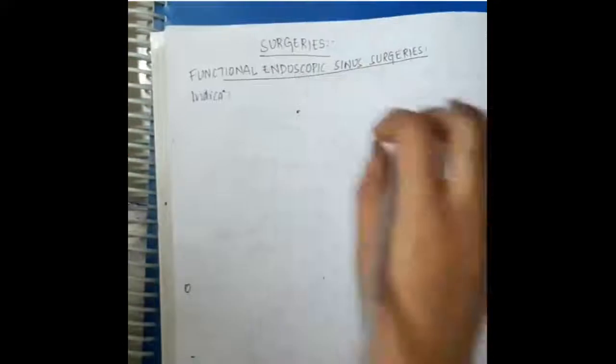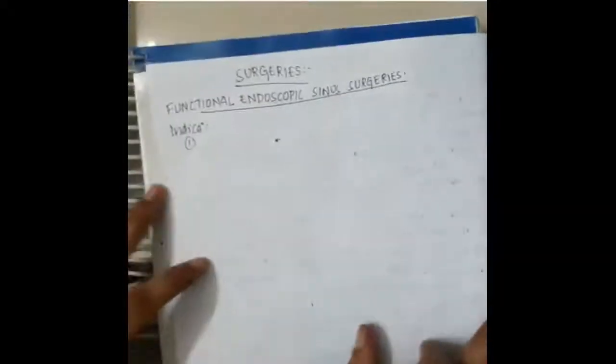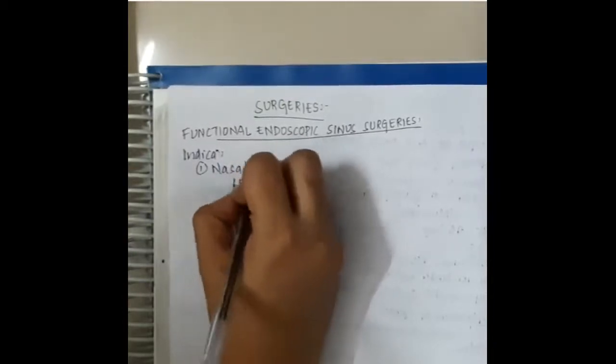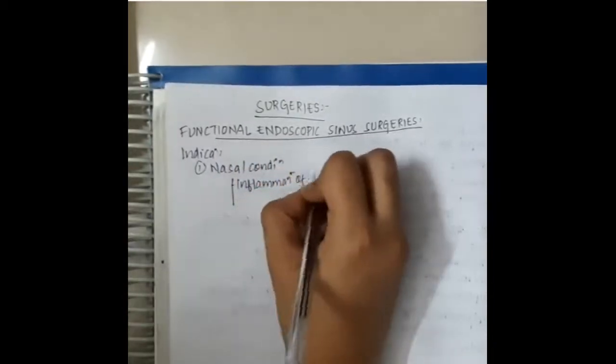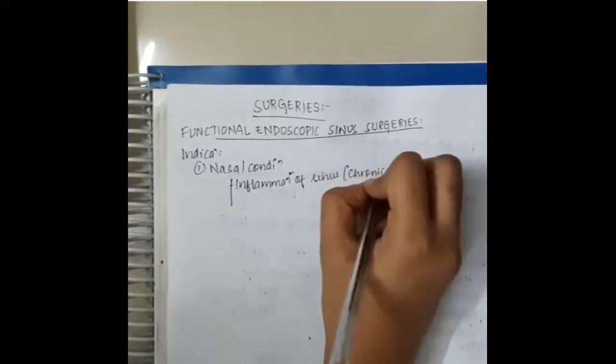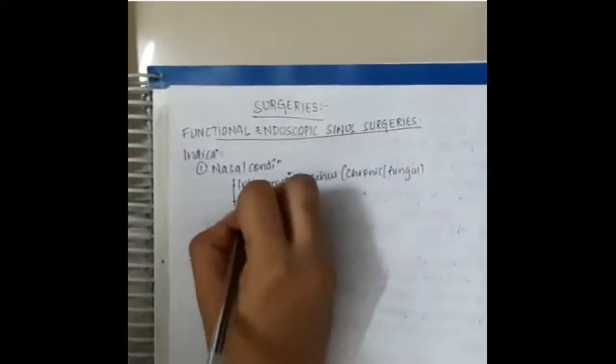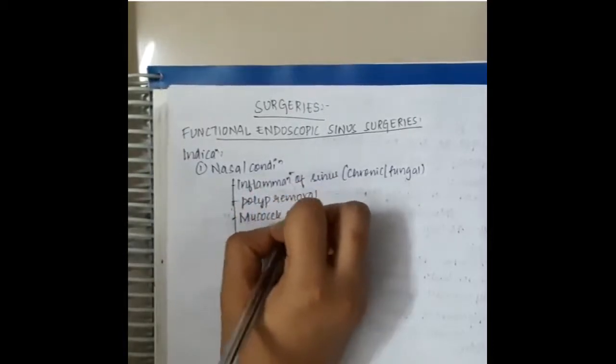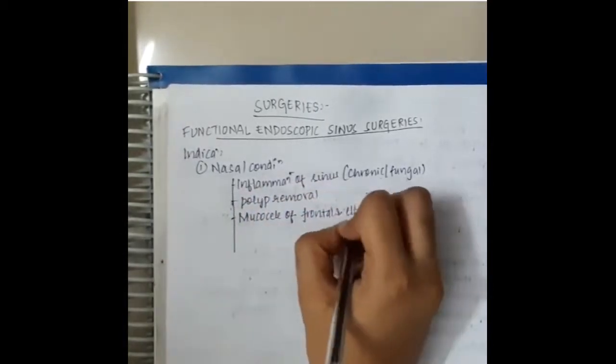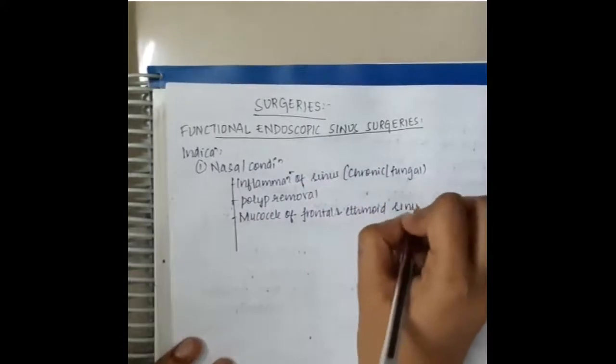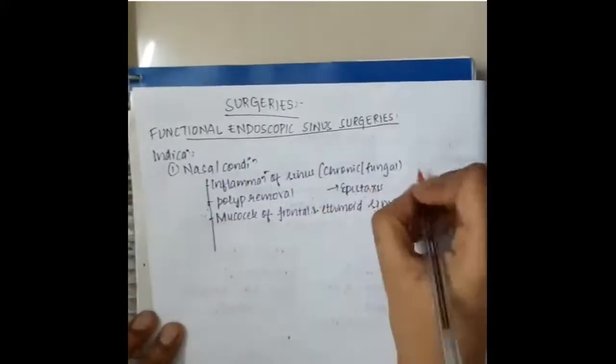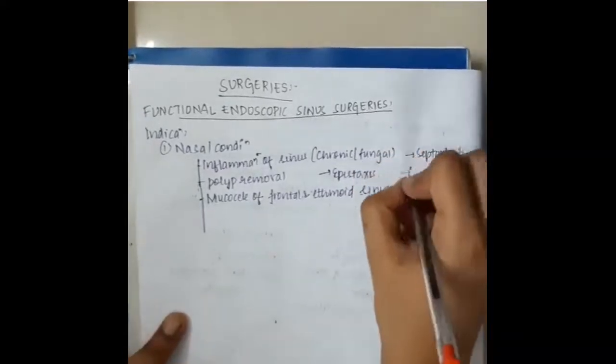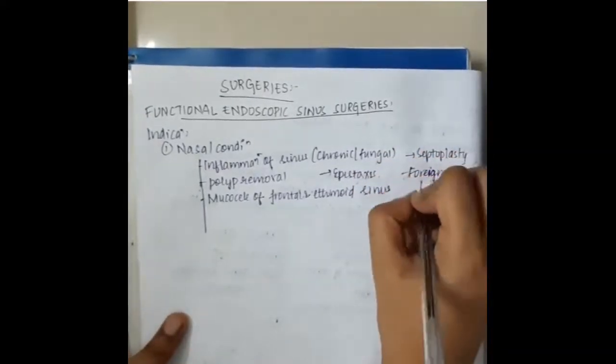Indications of functional endoscopic sinus surgery first include nasal conditions, which include inflammation of sinuses, chronic or fungal sinusitis. This includes polyp removal, mucosal conditions of frontal and ethmoidal sinus. It involves epistaxis, septoplasty, and foreign body removal.